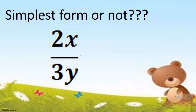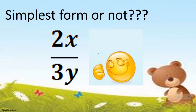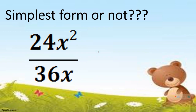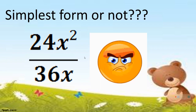Is 2x over 3y written in simplest form? Yes, thumbs up. Next, we have 24x squared over 36x. This is not written in simplest form.